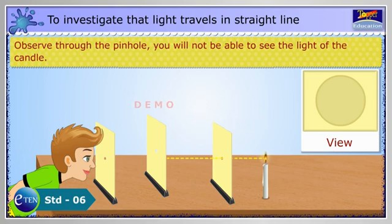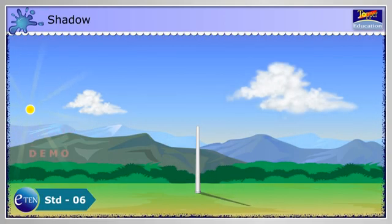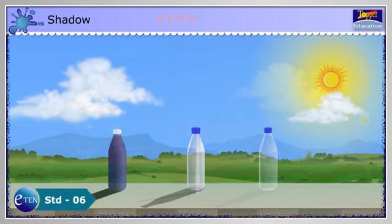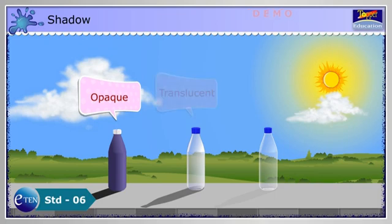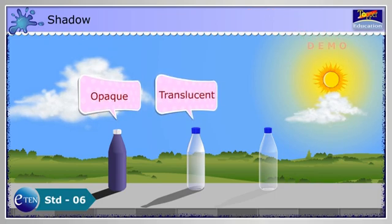Shadow. A shadow is made when an object blocks light. The shadow appears on the side of the object furthest from the light source. The object must be opaque or translucent to make a shadow. A transparent object will not make any shadow as light will pass straight through it.